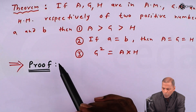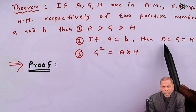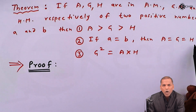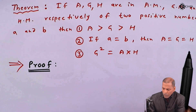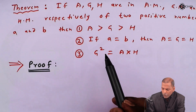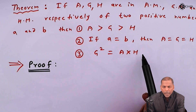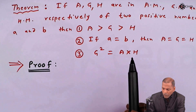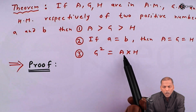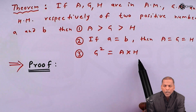Number two: if a and b are equal, then we have to prove that arithmetic mean is equal to geometric mean is equal to harmonic mean. And number three: we have to prove that G squared is equal to A into H. It means the geometric mean whole square is equal to the product of arithmetic mean and harmonic mean.